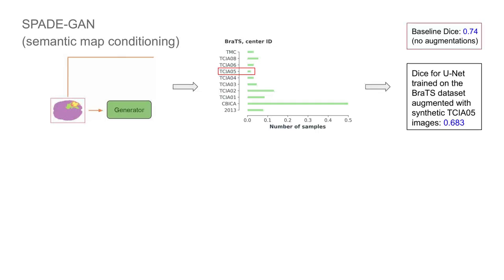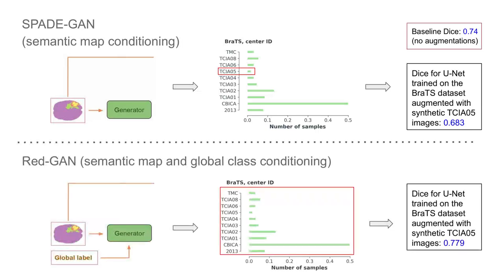Thus, when we make an experiment by augmenting original data with synthetic images for the downstream segmentation task, we get a DICE score even lower than for the baseline, which is a segmentation network trained without any augmentations. Whereas for the proposed GAN, we train the network on the whole dataset, resulting in higher quality synthetic images that in turn manifest in an increase of segmentation accuracy for the downstream segmentation task compared to baseline.